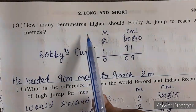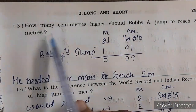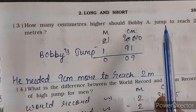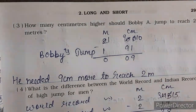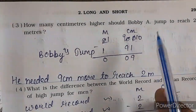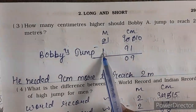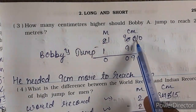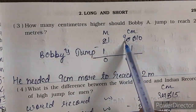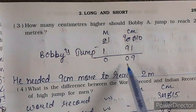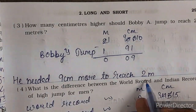Next — how many centimeters higher should Bobby jump to reach 2 meters? Bobby ki jump thi — 1 meter 91 centimeter. 2 meter mein se Bobby ki jump minus kar dein — 2 meter 00 centimeter minus 1 meter 91 centimeter. 10 minus 1 nine, 9 minus 9 zero, carry forward liya, 1 minus 1 zero. Yani ki usse kitne centimeter ki zaroorat hai — 9 centimeter ki zaroorat hai 2 meter tak pahunchne ke liye.